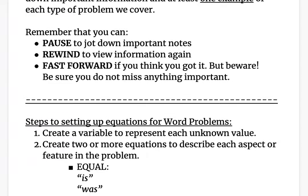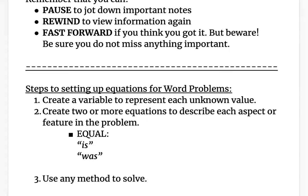Here are the steps for setting up equations for word problems. It's pretty simple — just three steps. The first step is to create a variable to represent each unknown value. The unknown value is what you're trying to solve for. Since you don't know what that is equal to, you have to create a variable to represent it until you can solve to figure out what it is.